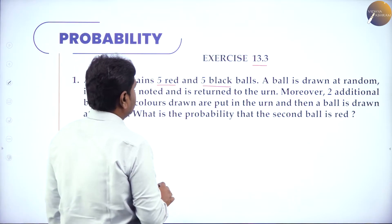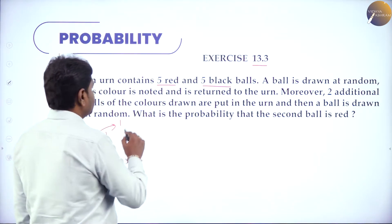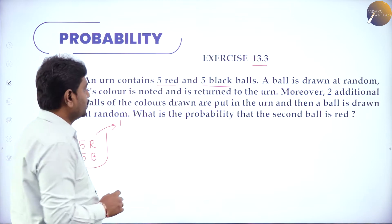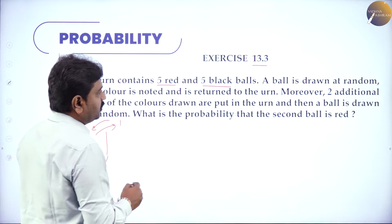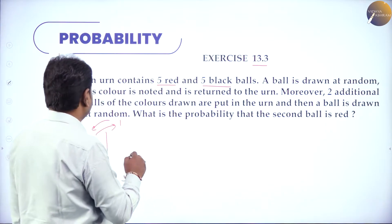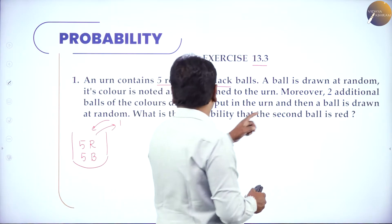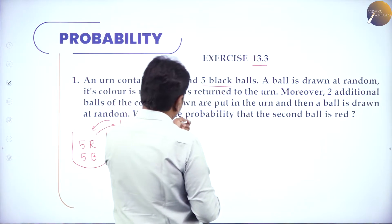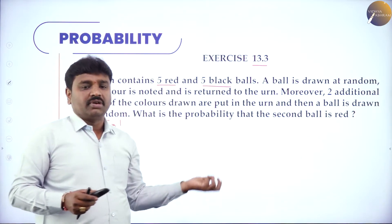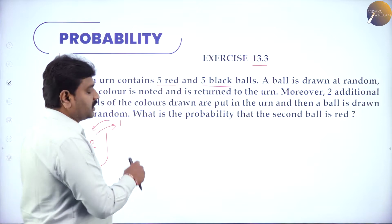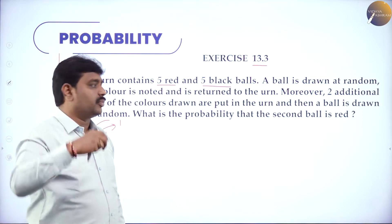A ball is drawn at random. We will take one ball at random, its color is noted, and then it is returned. We will put it back. More two additional balls of the same color are put in the urn. So suppose if I take one red ball, I will add two more red balls. Or if I take a black ball, I note the color black and add two more black balls.